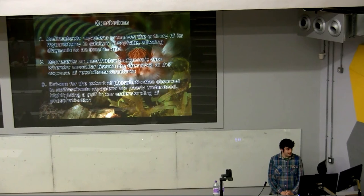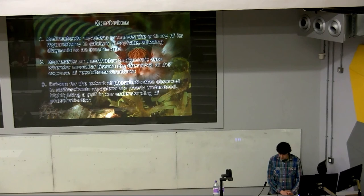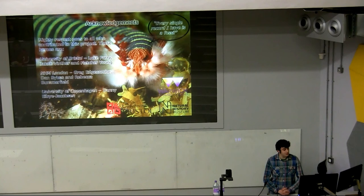In conclusion: Rollins Ketomyoplina preserves the entirety of its myoanatomy in calcium phosphate, allowing diagnosis as an amphinomid. It represents an unorthodox taphonomic case whereby muscular tissues are preserved at the expense of recalcitrant structures. And the drivers for the extent of phosphatisation observed in Rollins Ketomyoplina are poorly understood, highlighting a gulf in our understanding of phosphatisation. I'd like to thank my colleagues at the University of Bristol, NHM, and University of Copenhagen, and Warwick for funding. I'll leave you with perhaps the only Henry Rollins quote I could find related to fossils: 'every single record I have is a fossil.' Thank you.